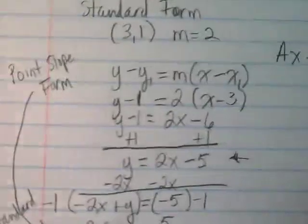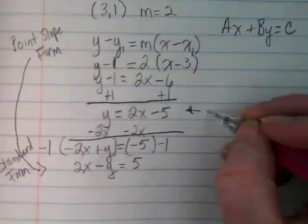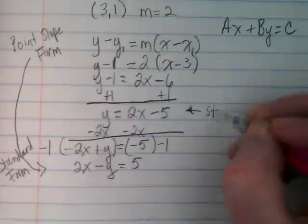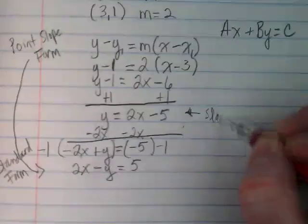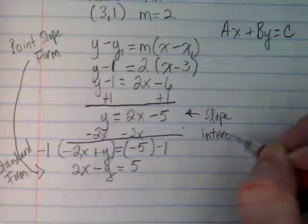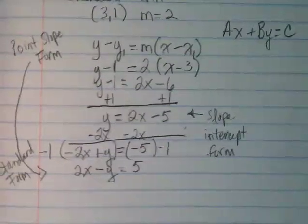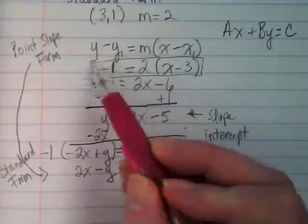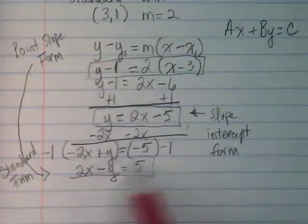But in the middle, we had slope-intercept form. So in our converting, we actually ended up with all three forms of the equation. We started off here. In the middle, we had this one. And finally, at the end, we have this one.